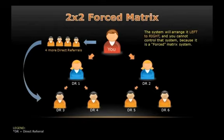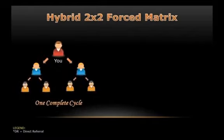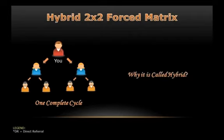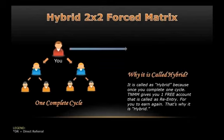To complete the explanation on the TNMM hybrid system, here is why it is called hybrid. That is you, and you have already completed your matrix, which makes you cycle out. After you cycle, here is where the hybrid system works. It is called hybrid because once you complete one cycle, TNMM gives you one free account called a re-entry, for you to earn again. That's why it is hybrid.